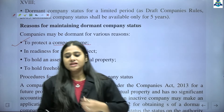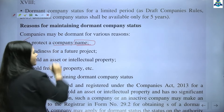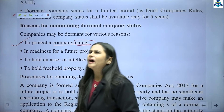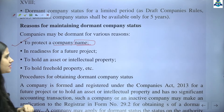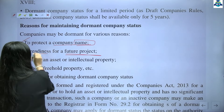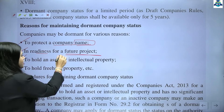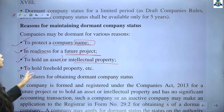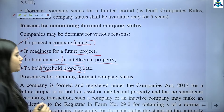Reasons for maintaining dormant company status: companies may be dormant for various reasons. First, to protect a company name — as explained in the last lecture, you may register the name now but commence business operations after a few years, so you apply for dormant status to protect the name. Second, in readiness for a future project — you have made the company dormant for a future project. Third, to hold an asset or to hold an IPR (intellectual property). Fourth, to hold freehold property.